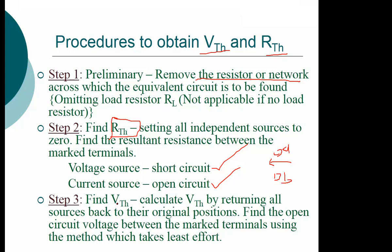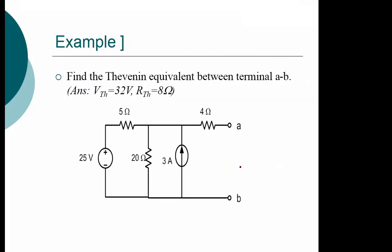After finding R-Thevenin, we find the Thevenin equivalent voltage by reconnecting or reactivating all the sources and finding the open circuit voltage across the terminals. So this would be R-Thevenin if our circuit is to the left. Then we find the open circuit voltage across the terminals, which is our E-Thevenin or V-Thevenin. After that, you redraw your circuit with an equivalent resistance and an equivalent voltage.